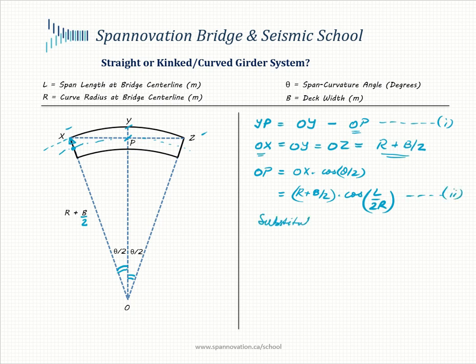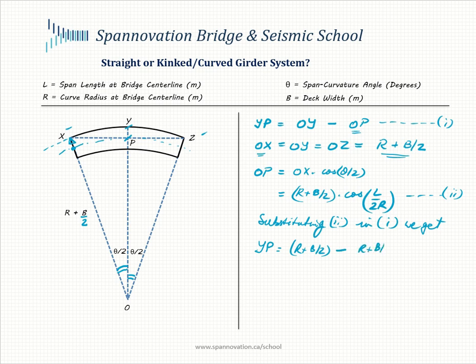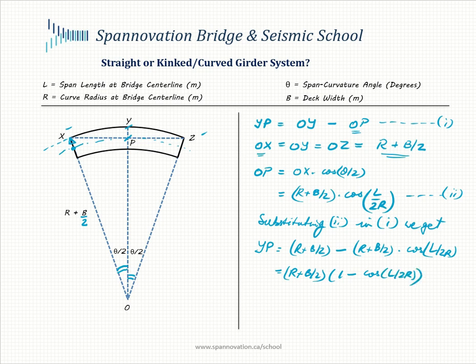Substituting equation 2 into equation 1, we get YP equal to (R + B/2) minus (R + B/2) times cosine(L/2R). Factoring out (R + B/2), this becomes YP equals (R + B/2) times (1 minus cos(L/2R)). We now have the value of PY.